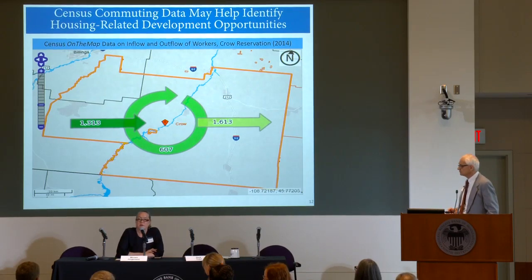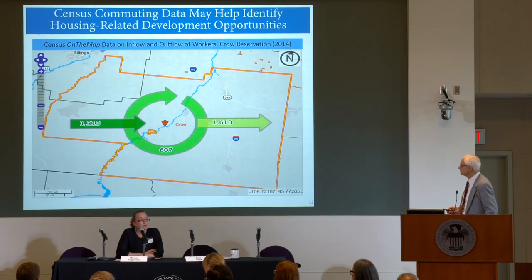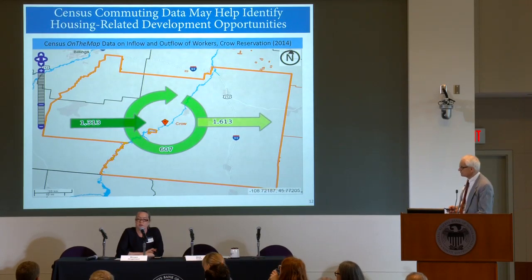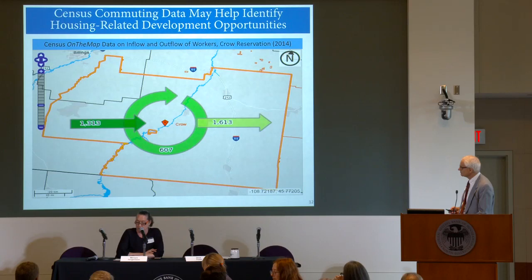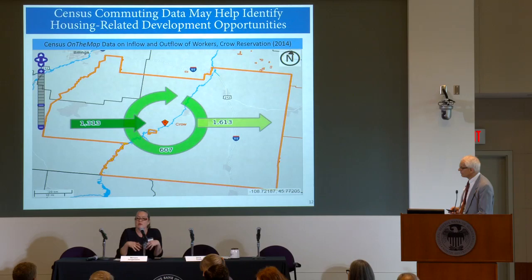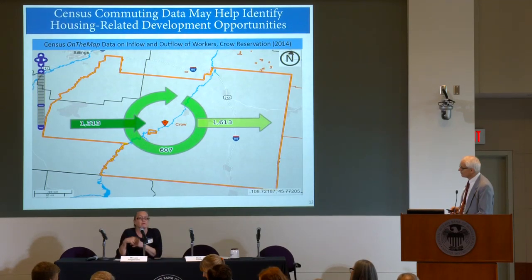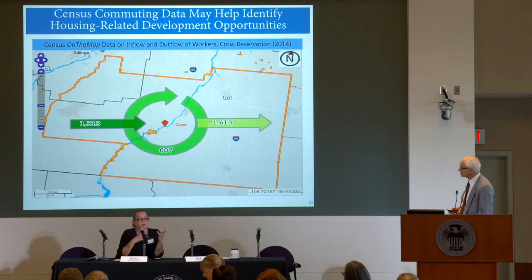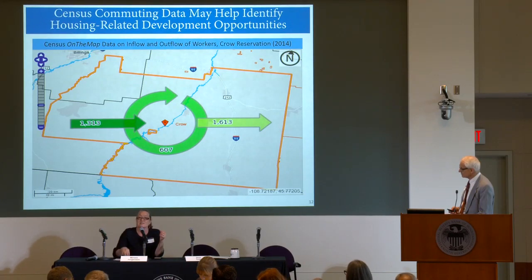This really speaks to how people are thinking about living and working in tribal communities. At a place like Crow, there's a real opportunity to increase supply of on-reservation homeownership housing with all those people commuting in. It also shows they're doing a good job providing housing for people who want to be part of the community but work off-reservation. It points to the importance of really knowing your population in a more granular way — who's living where, why they're living there, what kind of housing serves them, whether it's elder housing, transitional housing, or housing for younger families.